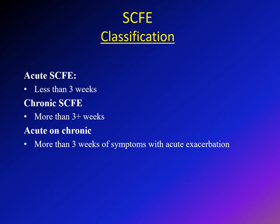There is another classification — not as important as stable versus unstable — which describes acute versus chronic versus acute on chronic. Acute SCFE means symptoms have been present for less than three weeks. Chronic SCFE means symptoms have been present for more than three weeks. Acute on chronic means a patient with a long history of SCFE symptoms who has recently experienced more pain than usual.